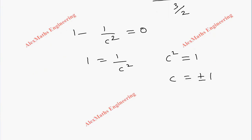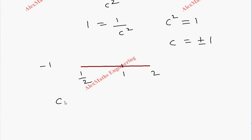But the given interval is 1/2 to 2. Let's take a small reference line. This is 1/2 and this is 2. 1 is lying between these values, and -1 is lying outside the interval. So c = -1 does not belong to the open interval (1/2, 2), but c = 1 belongs to the open interval (1/2, 2).